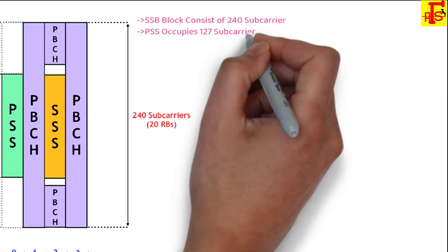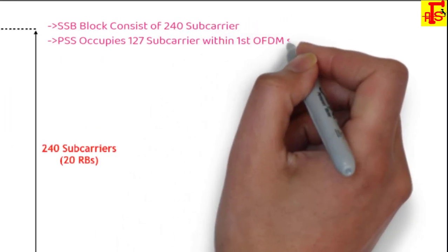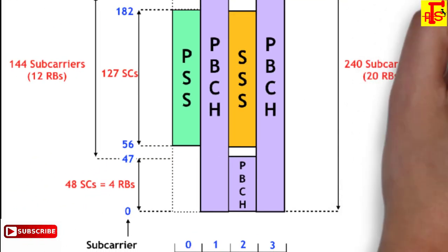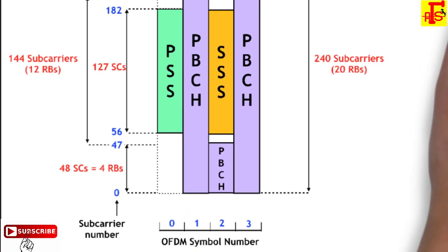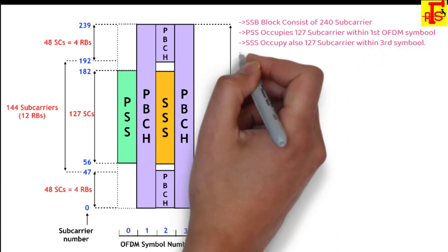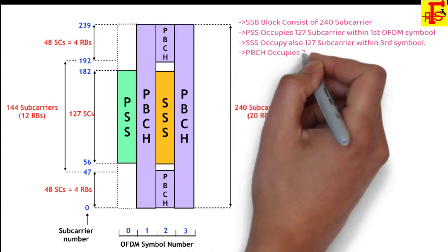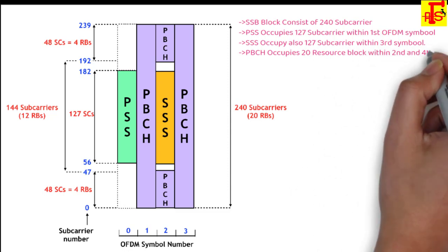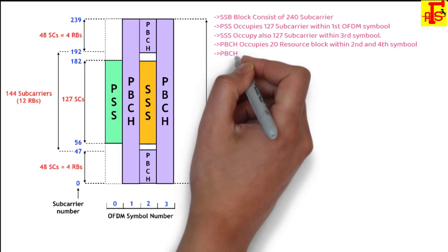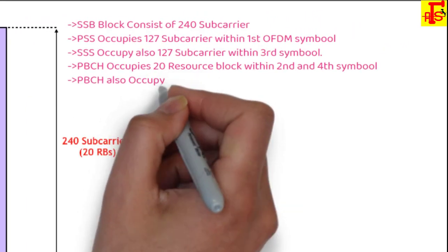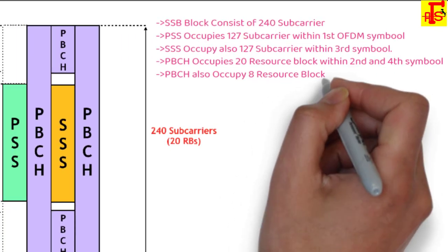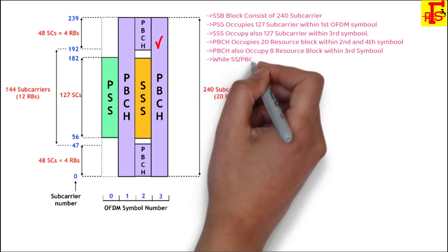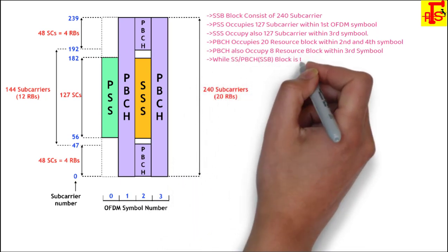PSS occupies 127 contiguous subcarriers within the 1st OFDM symbol, while SSS occupies 127 contiguous subcarriers within the 3rd OFDM symbol. PBCH occupies 20 resource blocks within the 2nd and 4th OFDM symbols, that's 40 resource blocks, and PBCH also occupies 8 resource blocks within the 3rd OFDM symbol.